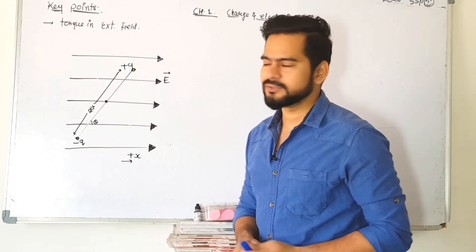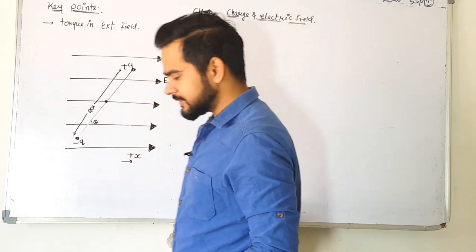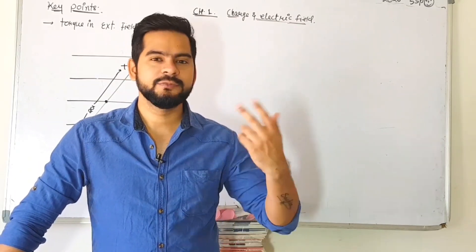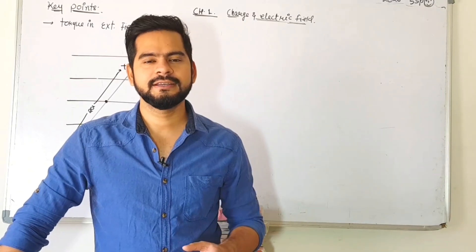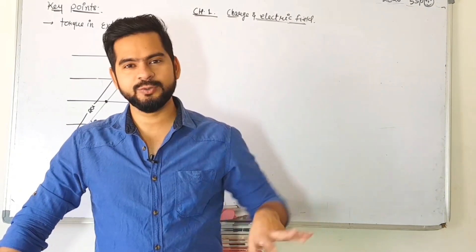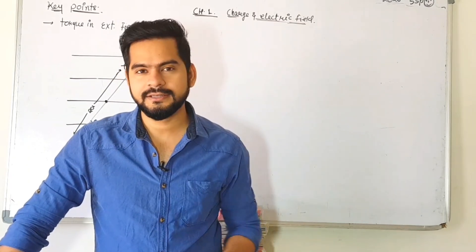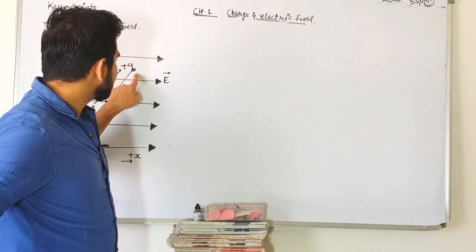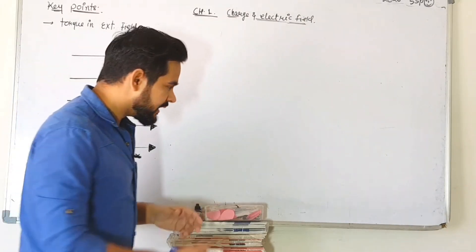We are taking theta angle because we have to derive the general equation — it can be any angle. Now the theory starts: what will happen to the charge when it is placed in an external electric field? I have always said that when you think about the electric field, think of it as a territory. When another charge comes into that territory, the field will create some force on it. The equation F equals q into E means this charge is in the external electric field, so it will experience a force.